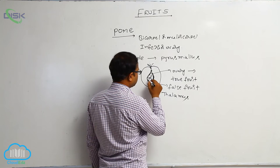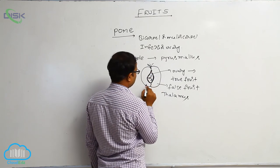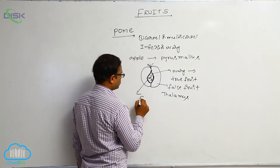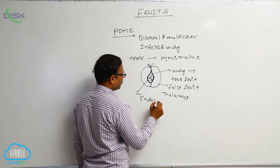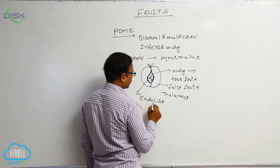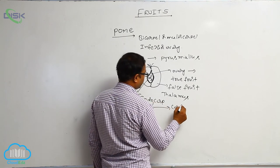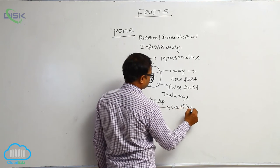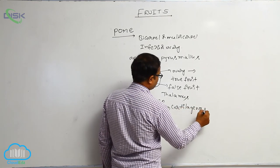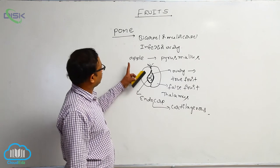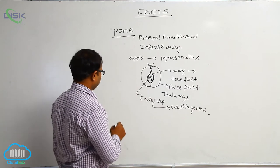Now, this endocarp is cartilaginous endocarp, as I mentioned previously. So this endocarp is cartilaginous. That is known as pome.